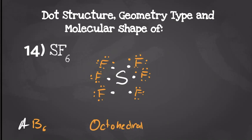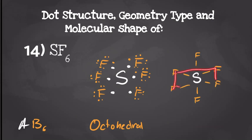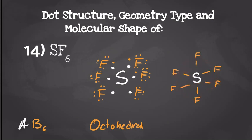Finding the dipole moment from our dot structure might be a little difficult, so if we draw it out we create this octahedral shape. The fluorine pulling from below is going to cancel with the fluorine pulling from above, and all of these fluorines are going to be pulling equally with each other — this one cancels out that one, and so on. So we end up with a non-polar molecule.